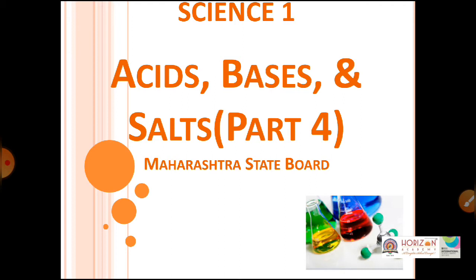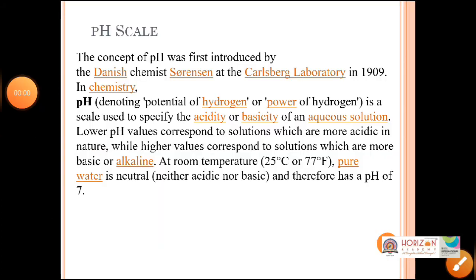Let us start by understanding the concept of the pH scale. I have already sent you the practicals of pH value determination by pH paper and universal indicator so that you can get real experience. Now we are going to study theory. pH means potential of hydrogen or power of hydrogen. The concept of pH was first introduced by Danish chemist Sorensen in 1909.